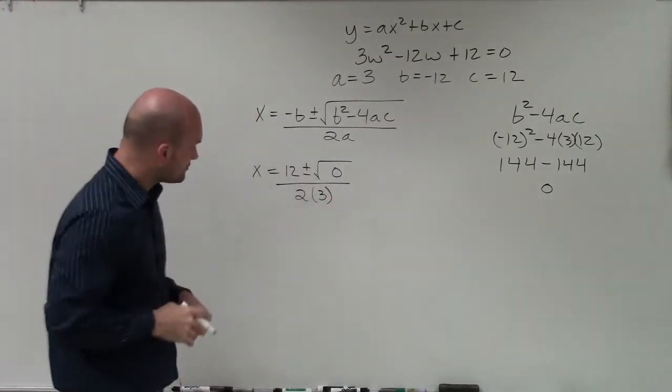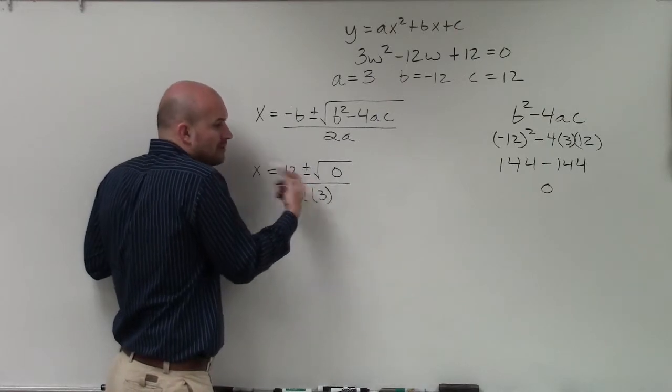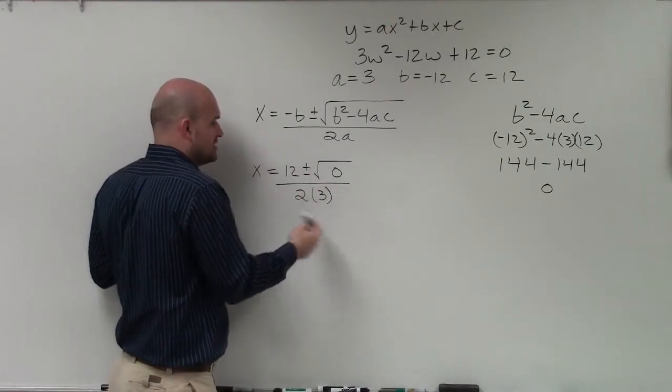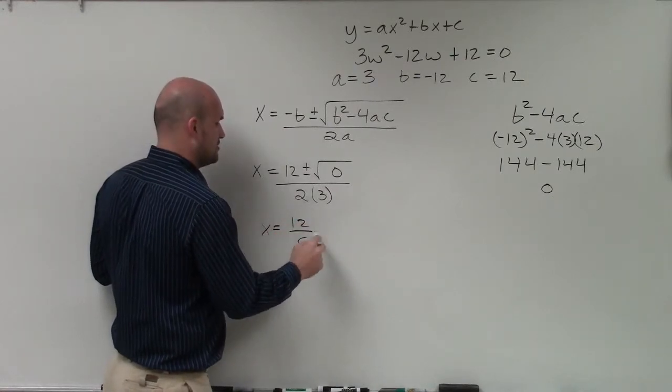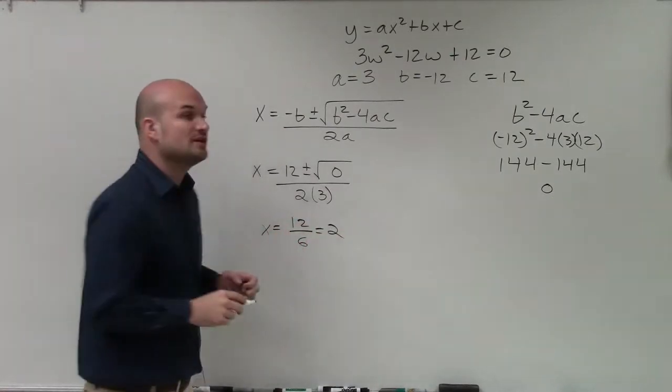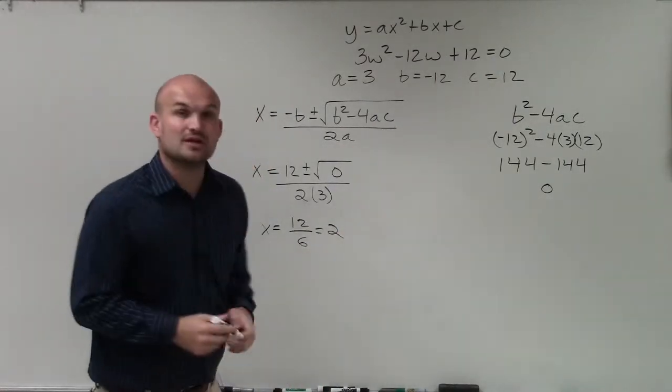Well, when you take the square root of 0, we know that's just 0. Therefore, x = 12/6, which means our only real solution—where this graph is going to touch and rebound—is at x = 2.